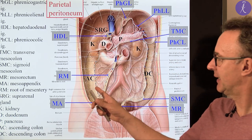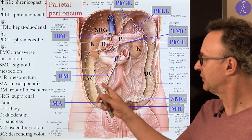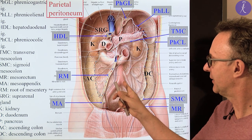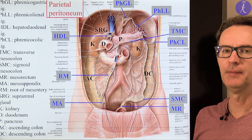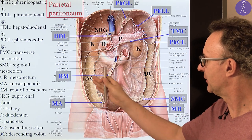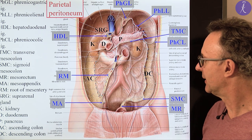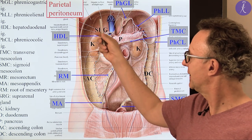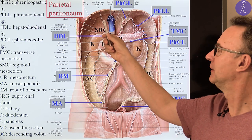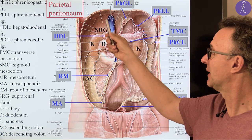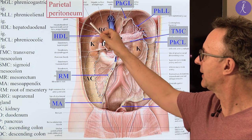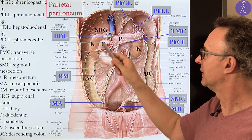The first slide shows the situation after the removal of the internal organs from the abdominal cavity. You can see the remaining peritoneal ligaments in a nice pattern. The liver is missing, and after its removal from the right hypochondrium we see a line — the reflection line of the parietal to the visceral peritoneum.